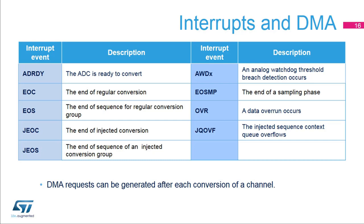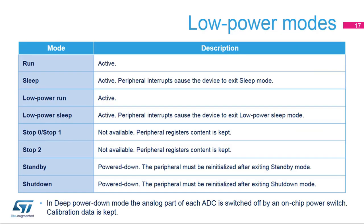DMA requests can be generated at each end of conversion when the ADC output data is ready. The ADCs are active in run, sleep, low power run, and low power sleep modes. In stop zero, stop one, or stop two mode, the ADCs are not available but the contents of their registers are kept. In standby or shutdown mode, the ADCs are powered down and must be re-initialized when returning to a higher power state. There is a deep power down mode in each ADC itself which reduces leakage by turning off an on-chip power switch. This is the recommended mode whenever an ADC is not used.